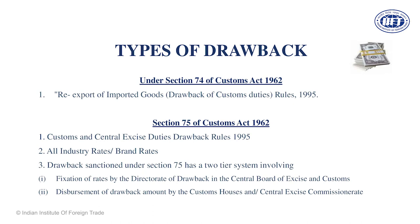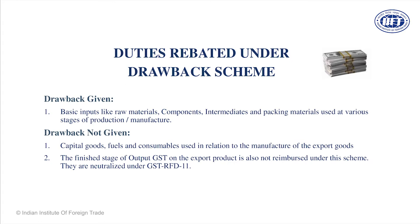Drawback is given on raw material, not on capital goods. It is given on raw material which will be used as input in the product which will be exported out of India — components, intermediates, packing material. Even packing material you are entitled to claim drawback. For example, a meat exporter in Meerut sources animals, cuts them into meat, and exports it. Packing material comes from Japan — can he claim duty drawback? Yes, because the packing material has suffered the incidence of duties.